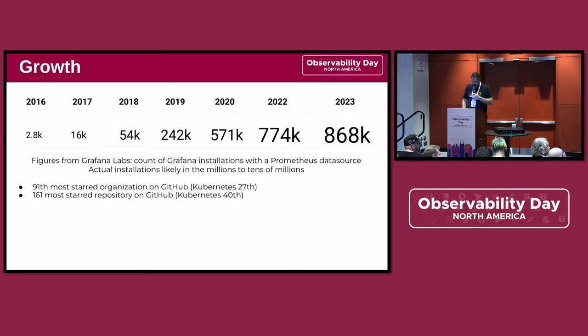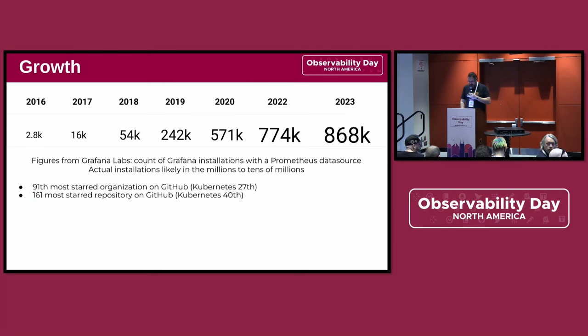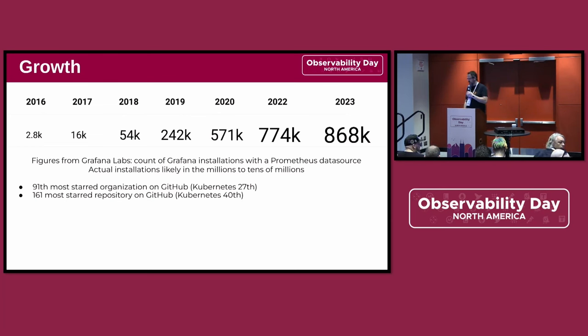We are by now the 91st most starred GitHub organization worldwide. Kubernetes is 27th. And the 161st most starred repository on GitHub — Kubernetes has been 40th.